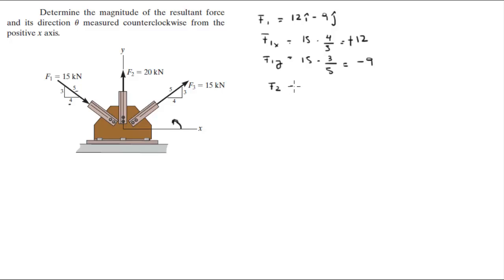F2 is 0 in the x because it's not going left or right, and it's going straight up in the y.